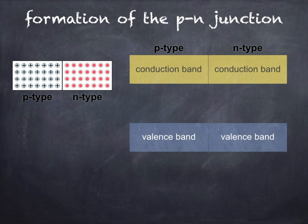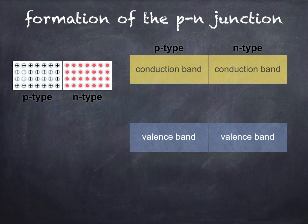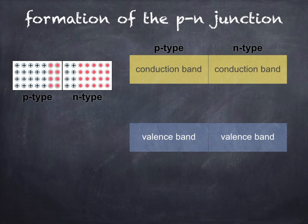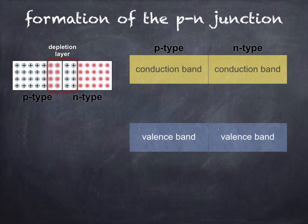Remember from the first video that the majority charge carriers in a P-type semiconductor are positive holes, and in an N-type semiconductor the majority charge carriers are negative electrons. Despite this, both are electrically neutral. Where the P-type and N-type regions meet is known as a P-N junction. Here, electrons from the N-type material move across the junction and combine with holes from the P-type, and vice versa. This is a process known as diffusion, which creates a region within the semiconductor known as the depletion layer.